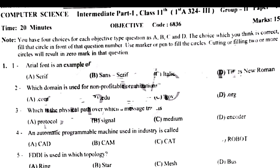Area found is an example — right option B. Which domain is used for non-profitable organizations? .org. Which is the physical path over which a message is transmitted? Transmission medium.